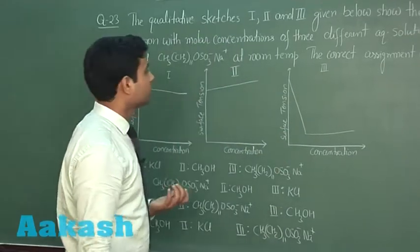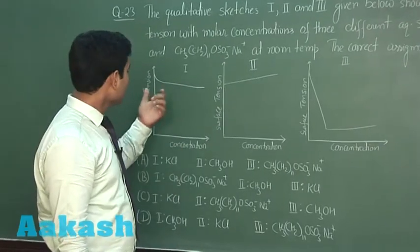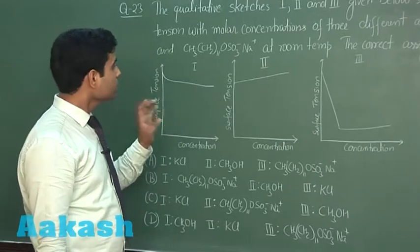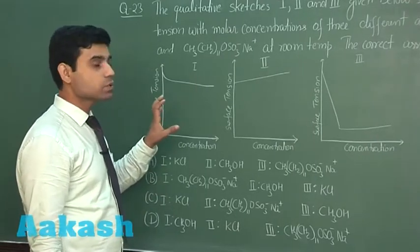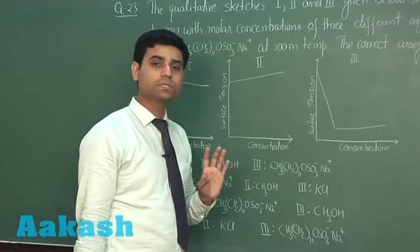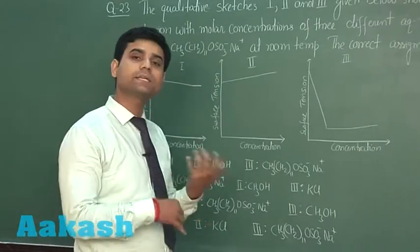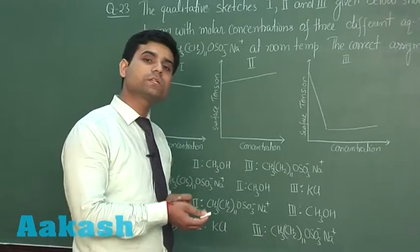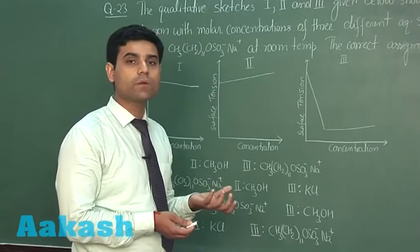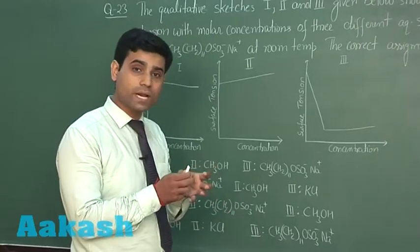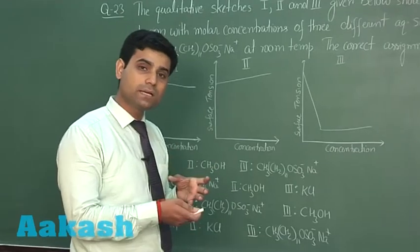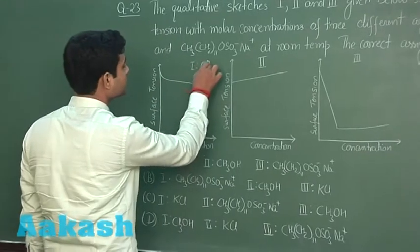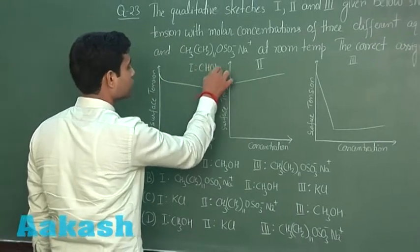What are the solutions? In the first case, we can see a slight decrease in surface tension. This may be because of addition of CH3OH in the solution. Why? Because when we add CH3OH methanol in water, it will show positive deviation from Raoult's law. Positive deviation from Raoult's law means the intermolecular force of attraction will decrease. This will result in the decrease in surface tension. So, this first graph will definitely represent CH3OH solution of CH3OH in water.